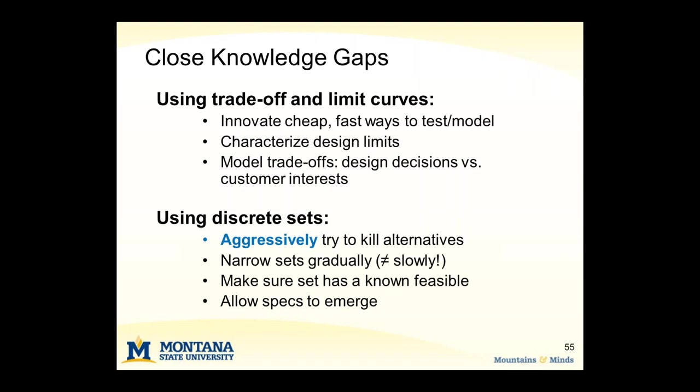If you're using discrete sets, as in parallel convergence, you'll want to aggressively eliminate alternatives. Rather than trying to pick a winner, look for the weakest link and eliminate it. You don't need to run everything through the same test — look for that Achilles heel and try to be creative in getting the information you need to make a decision. You don't always need the highest fidelity model; sometimes a lower fidelity model that you can generate quickly will generate enough information for you to decide whether to keep it in the set or not.